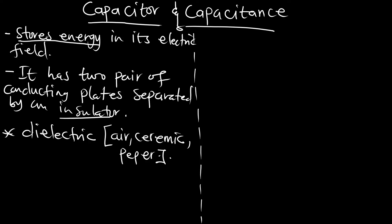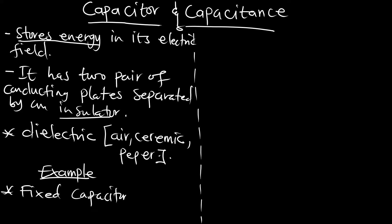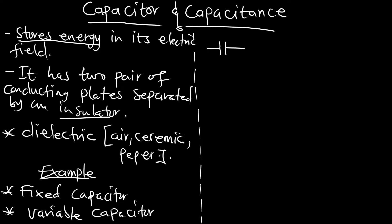Any capacitor is able to store electrical energy. We have two forms of capacitors: a fixed capacitor, meaning its capacitance cannot be changed, and a variable capacitor — as the name implies, it can be set to what we want. In circuit diagrams, these symbols represent fixed capacitors.